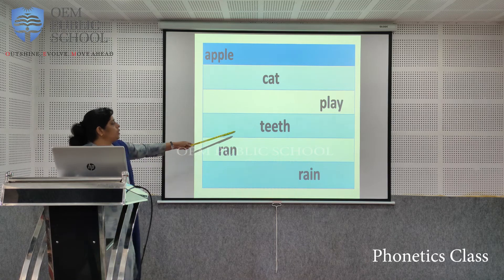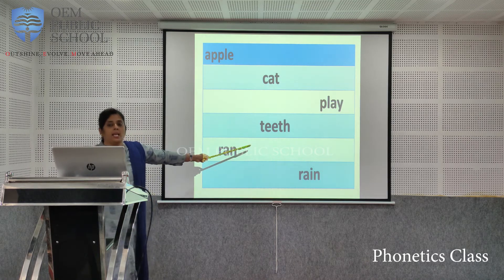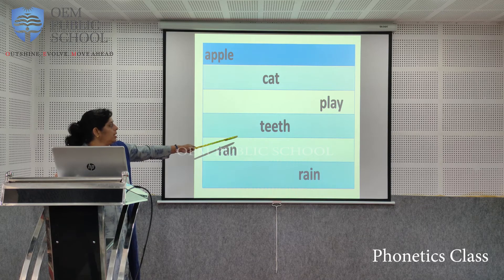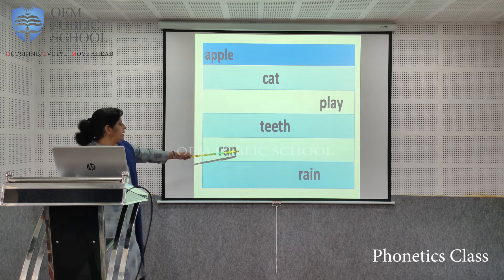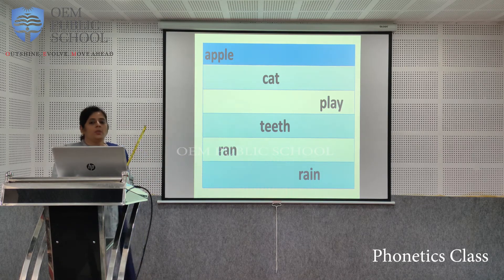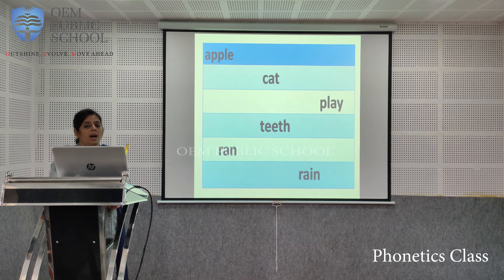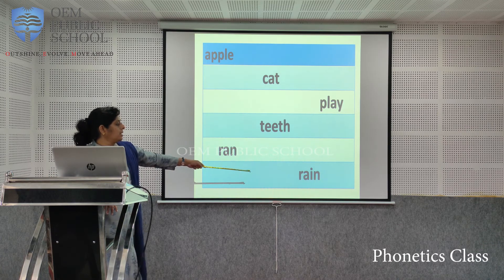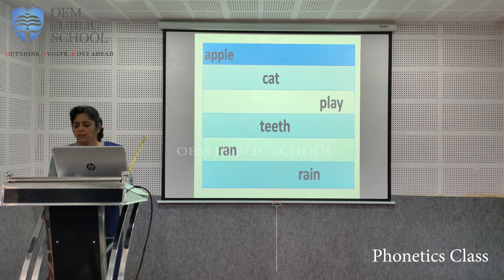Teeth — the E is more clear, so that is also a long vowel. Now ran and rain — can you see the difference? Ran — A, short sound. Rain — the A sound is more clear, so rain is a long vowel. Now try doing it yourself.